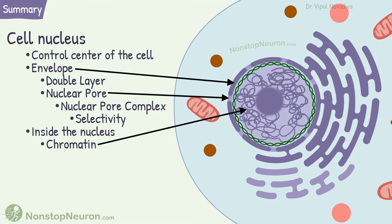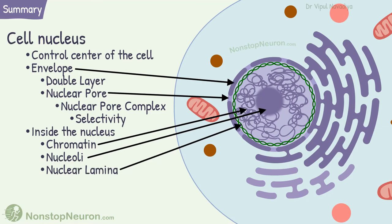Inside the nucleus, we have DNA spread in form of chromatin. Nucleoli which are accumulation of RNA and proteins. And nuclear lamina providing the support to the nuclear envelope. Substance of the nucleus is called nucleoplasm.